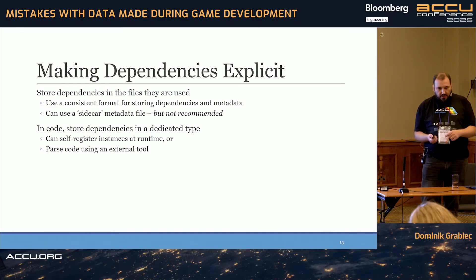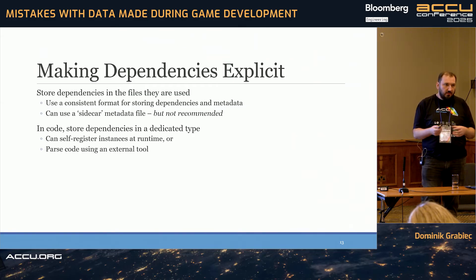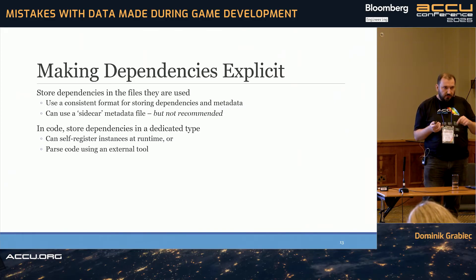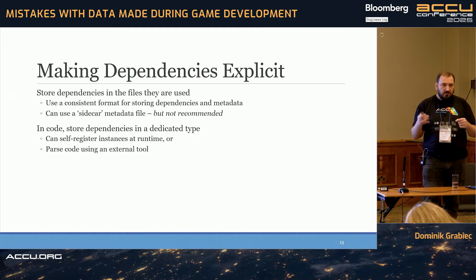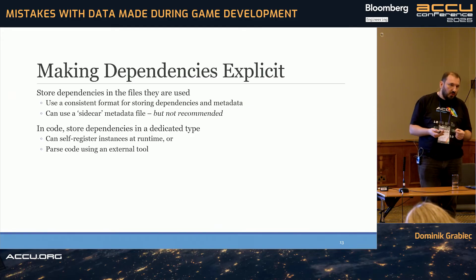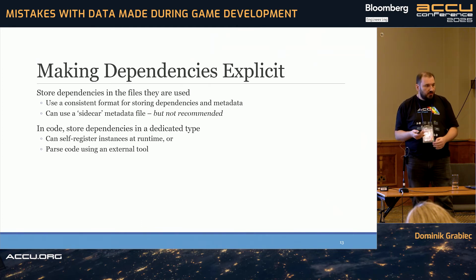For the code-level example: have a dedicated type which wraps the string literal, resource name, or path used to identify the asset. You can either have it self-register at runtime as a static constant at file scope where the constructor registers with some global system, or alternatively write a parser to go through and collect all these things from the source code.